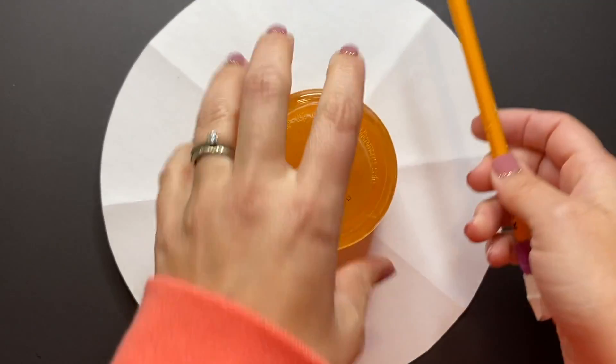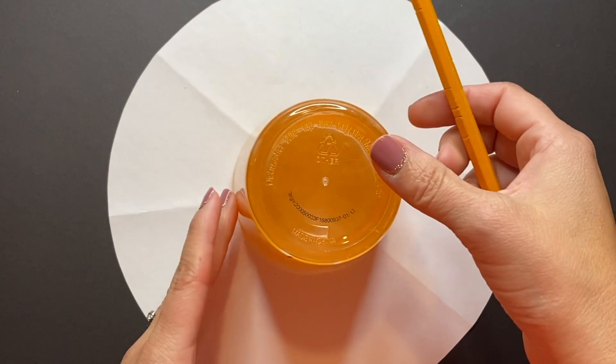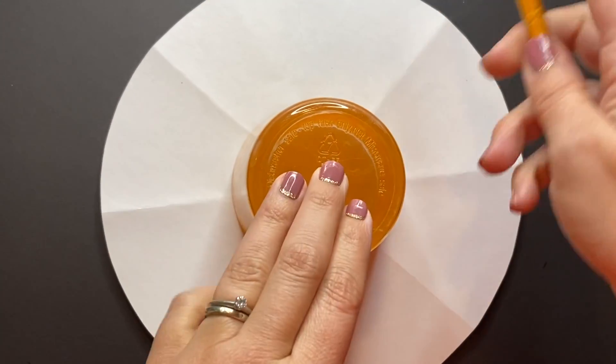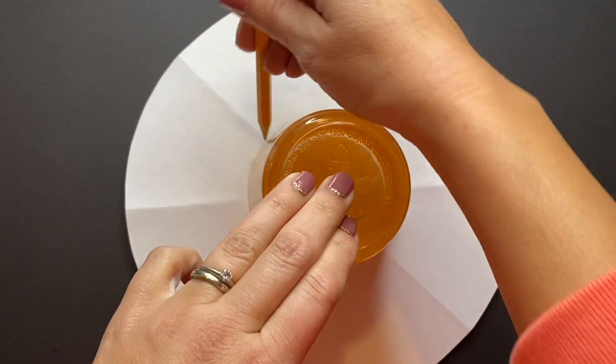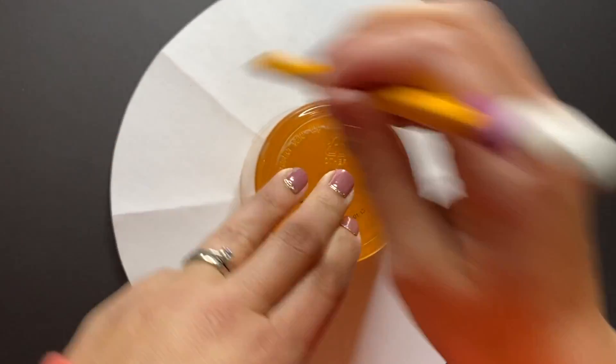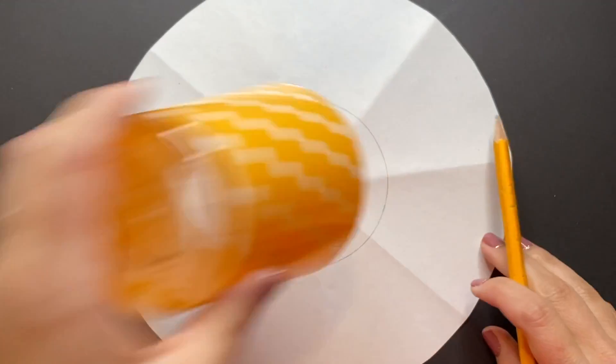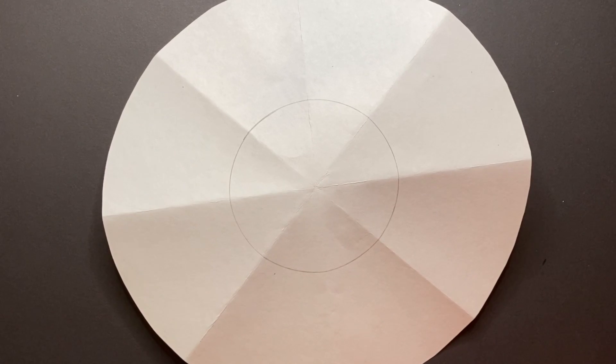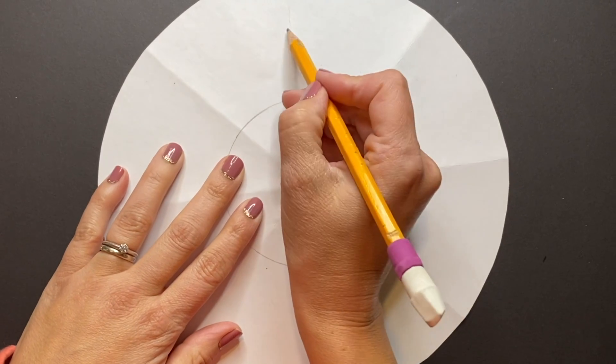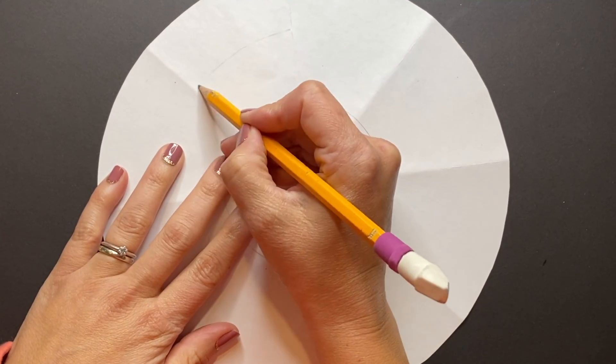Now that our paper is divided in eight parts we need two more circles. I'm going to start to trace a cup which is a perfect small circle for the center. So any plastic cup you might have at home works perfectly.